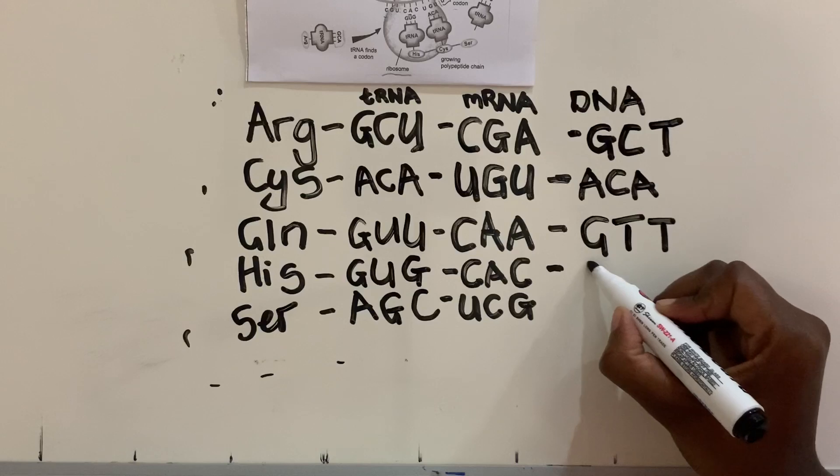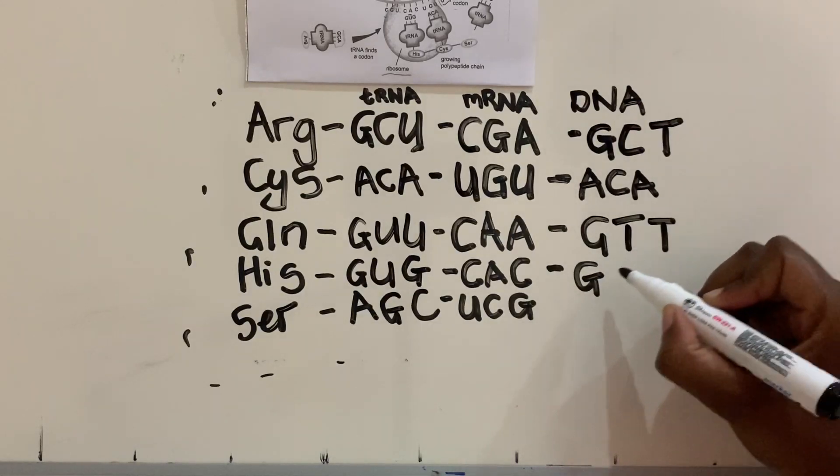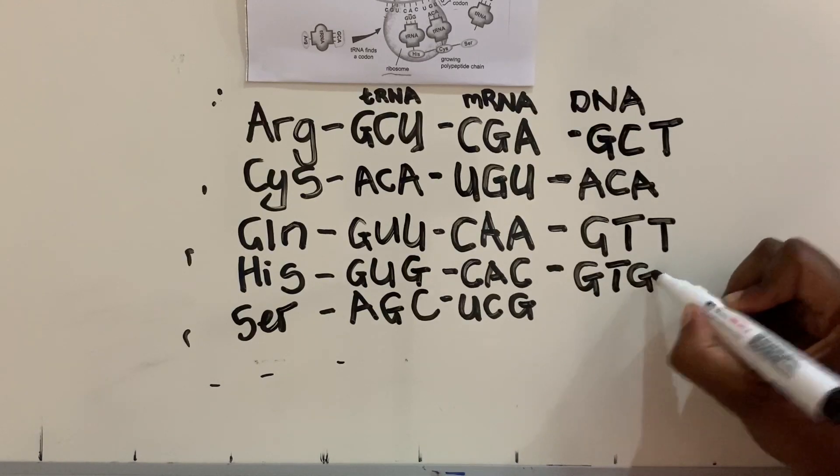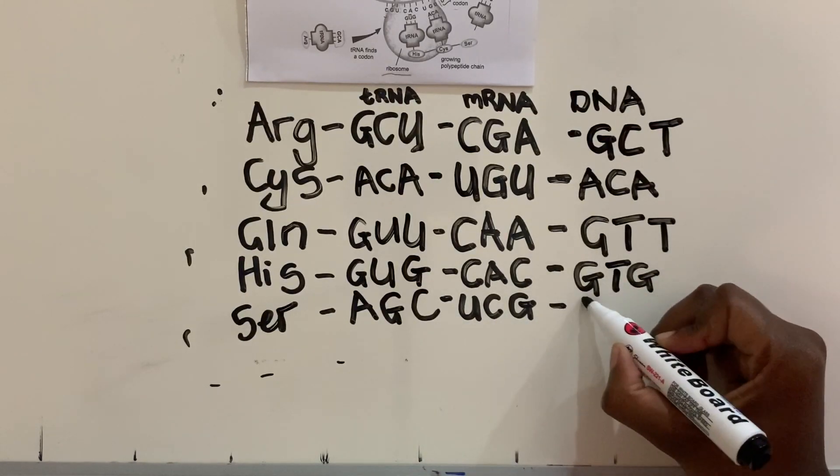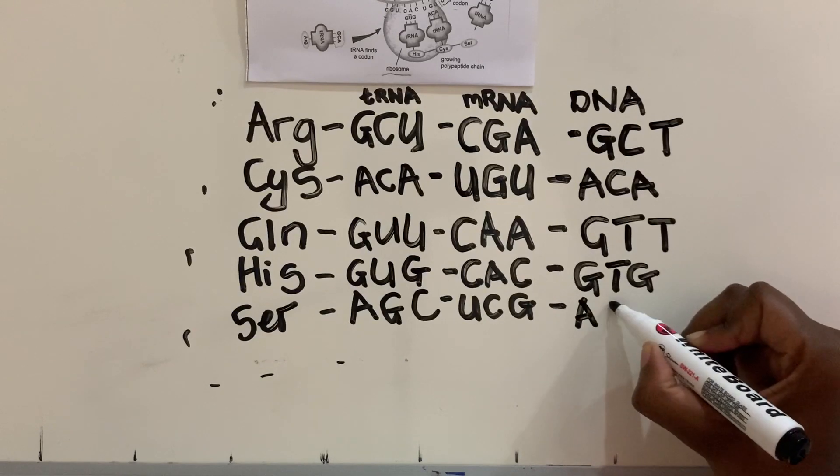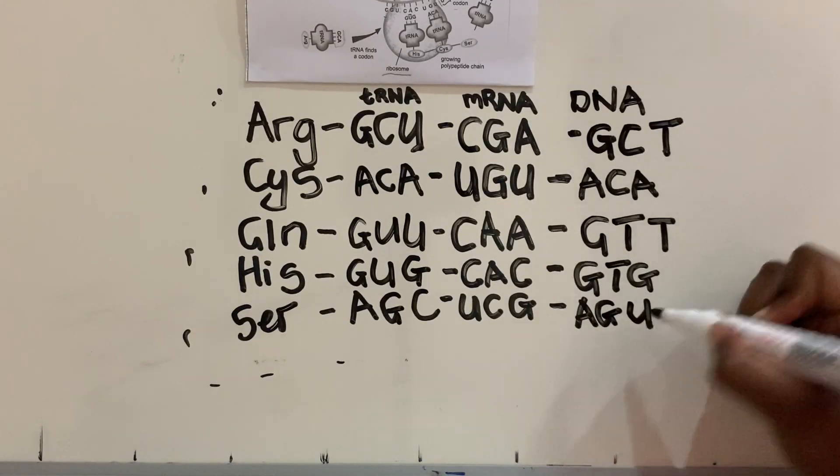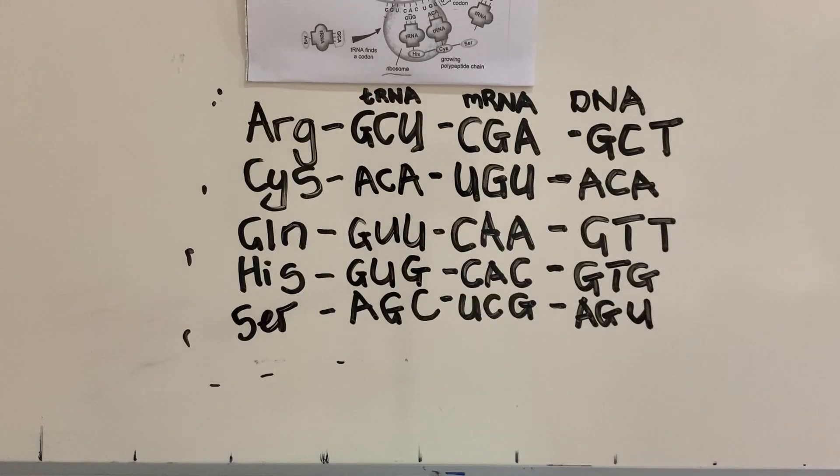We do the same there: GTG, uracil with adenine, guanine and uracil. And that's how you're going to complete the table. It's as simple as that. It's as simple as knowing which nitrogenous base pairs bond with which, and you'll be able to complete your table.